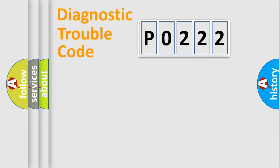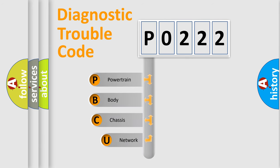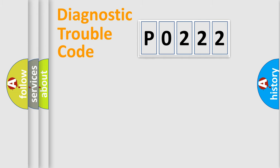Let's do this. First, let's look at the history of diagnostic fault code composition according to the OBD2 protocol, which is unified for all automakers since 2000. We divide the electric system of the automobile into four basic units: Powertrain, Body, Chassis, and Network.